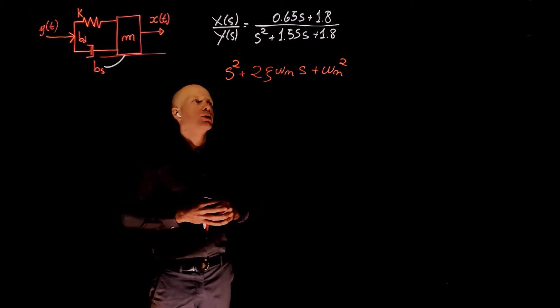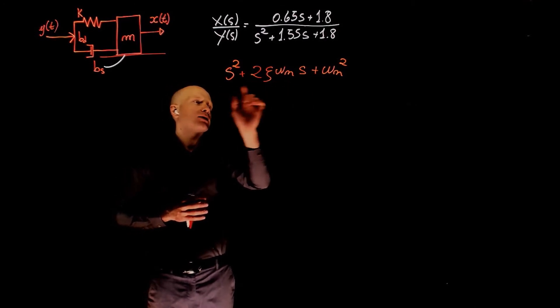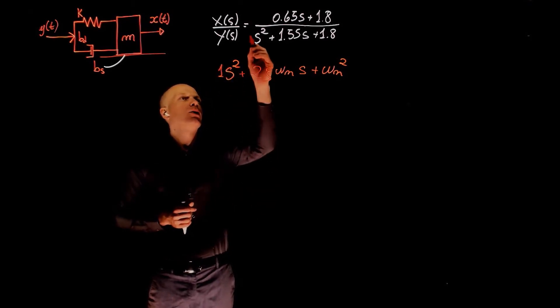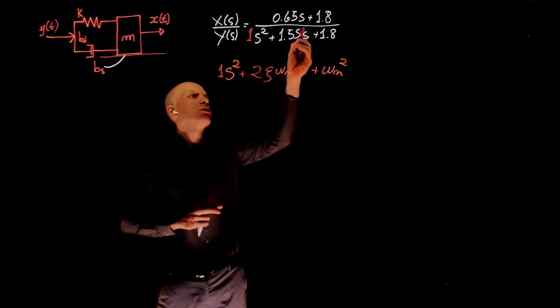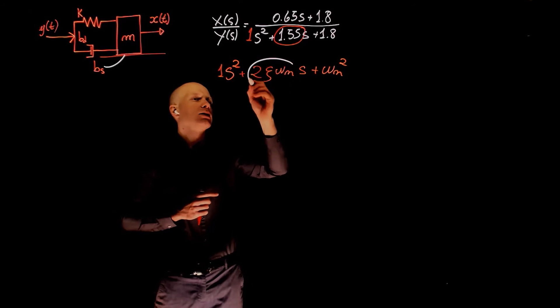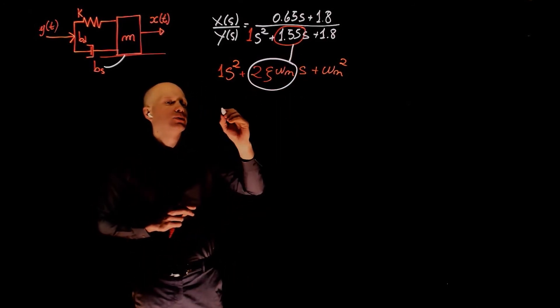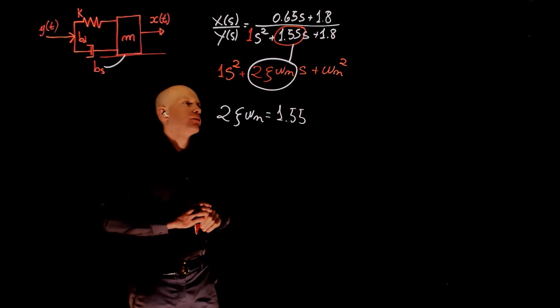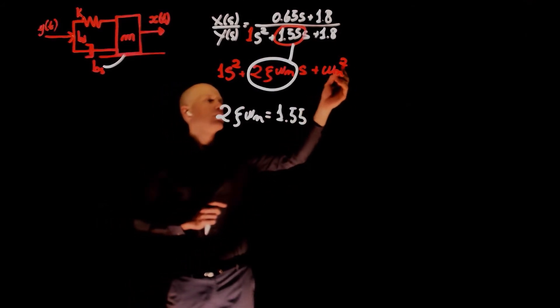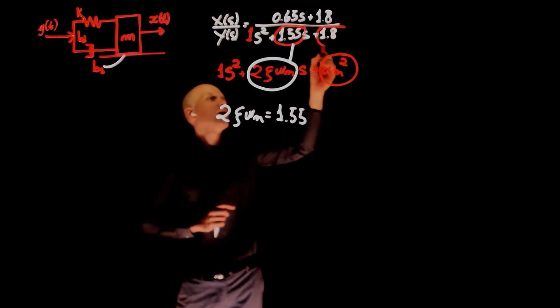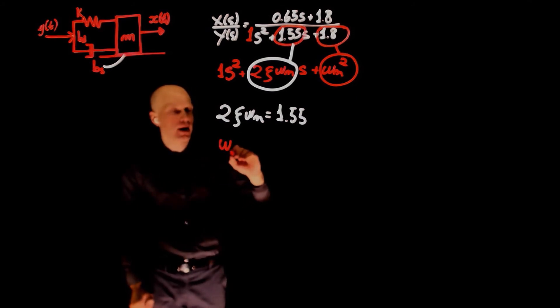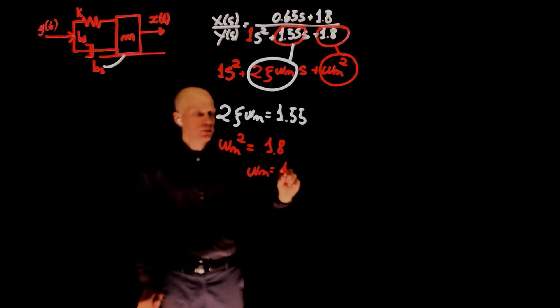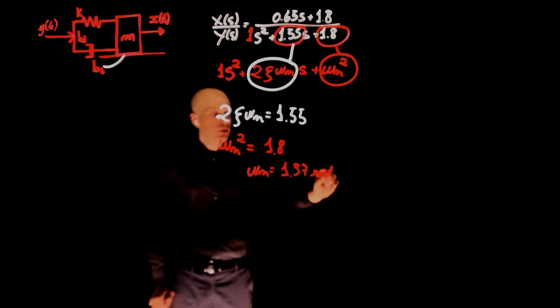To determine the natural frequency and the damping ratio, all we have to do now is to equate the coefficients of s, s squared, and s to the power of 0 to the numerical values we have. We see that 1 multiplies s here, 1 multiplies s there. Here we have 1.55 that multiplies s, and here we have 2 zeta omega n. So we can now write that 2 zeta omega n equals 1.55. Omega n squared multiplies s to the power of 0, and 1.8 here multiplies s to the power of 0. So we have now omega n squared equals 1.8.